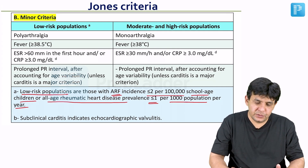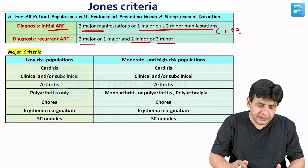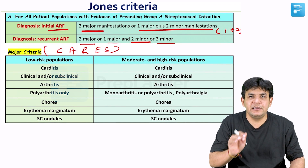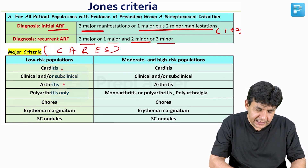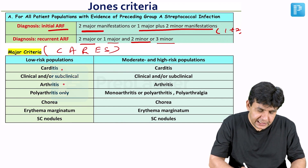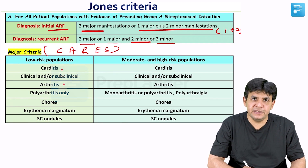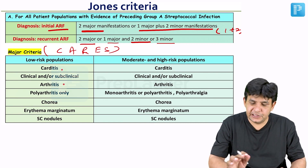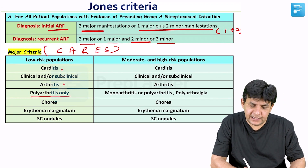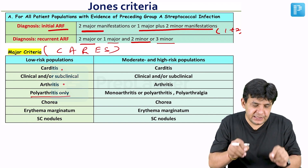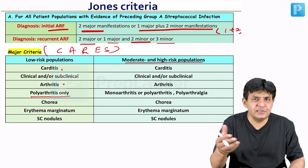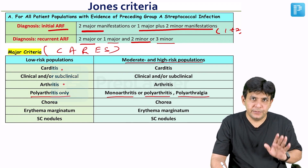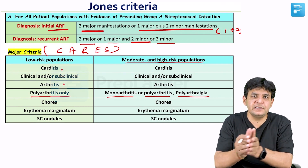Coming to the major criteria first — if you remember the mnemonic CARES, you can remember all major criteria at once. C stands for Carditis, A for Arthritis, R for Rheumatic chorea, E for Erythema marginatum, and S for Subcutaneous nodules. Clinical or subclinical carditis are major criteria and are the same in both populations. However, for the low-risk population, it is polyarthritis only — multiple joint inflammation. In moderate-to-high-risk populations, even a single inflamed joint, polyarthritis, or joint pain is taken into account.